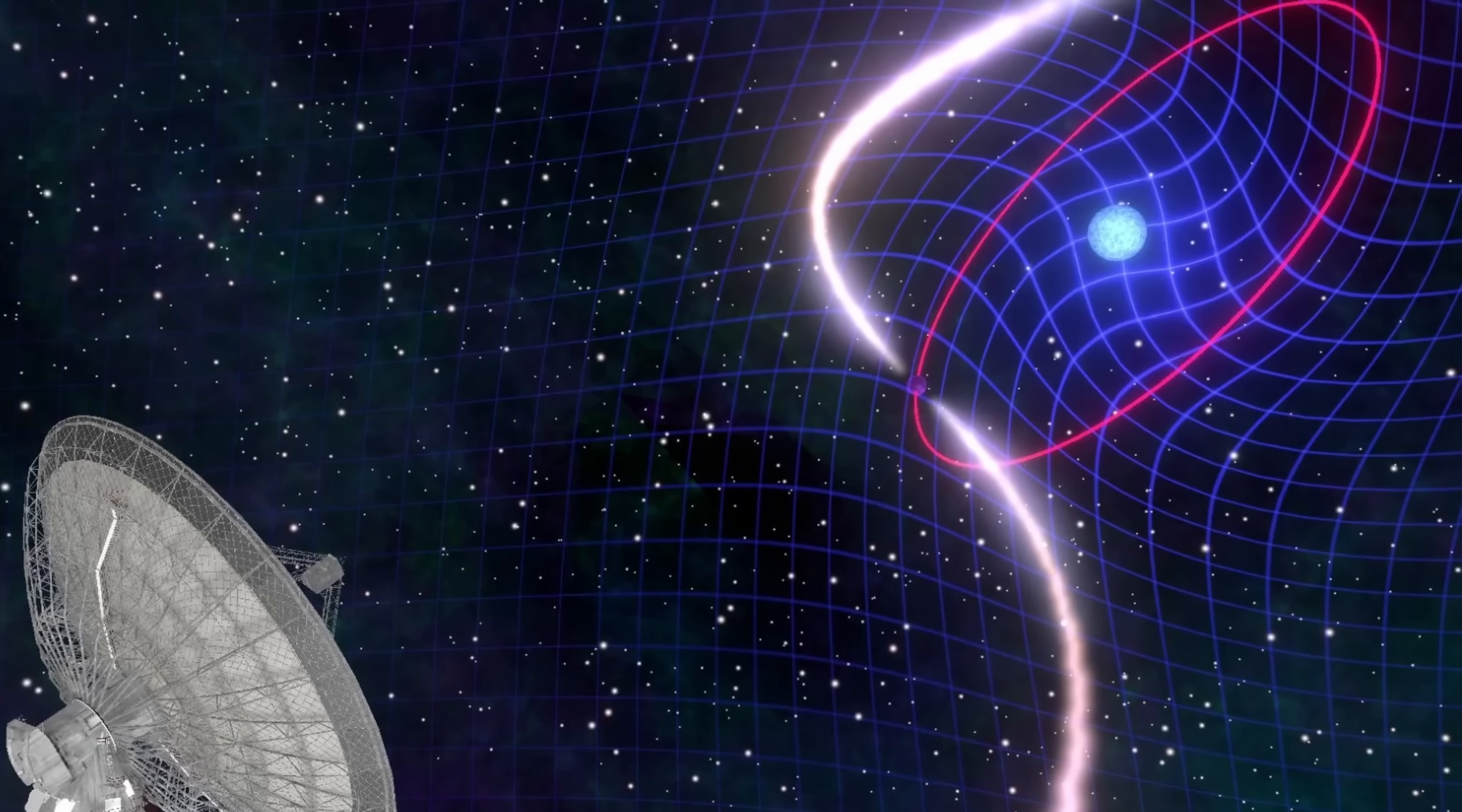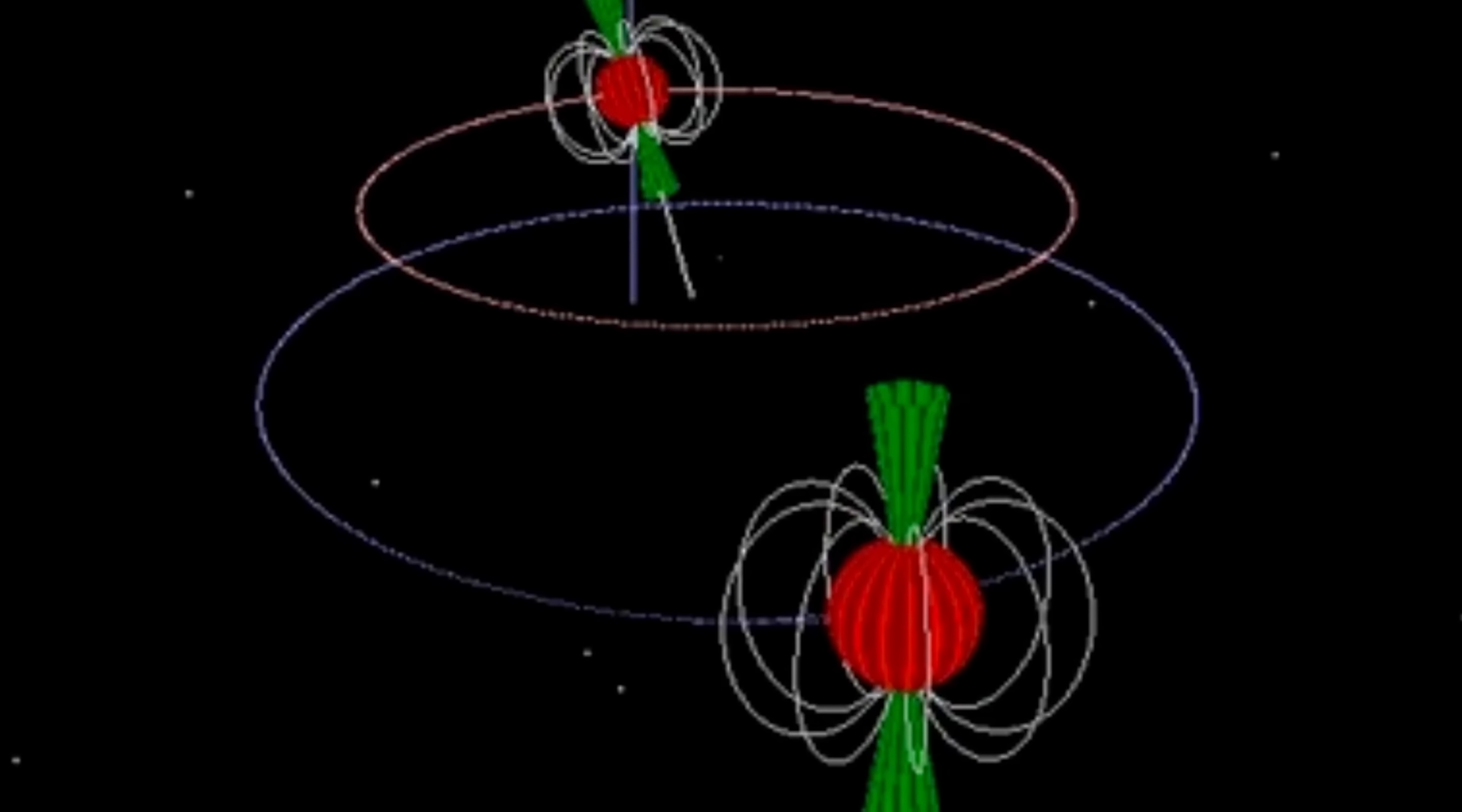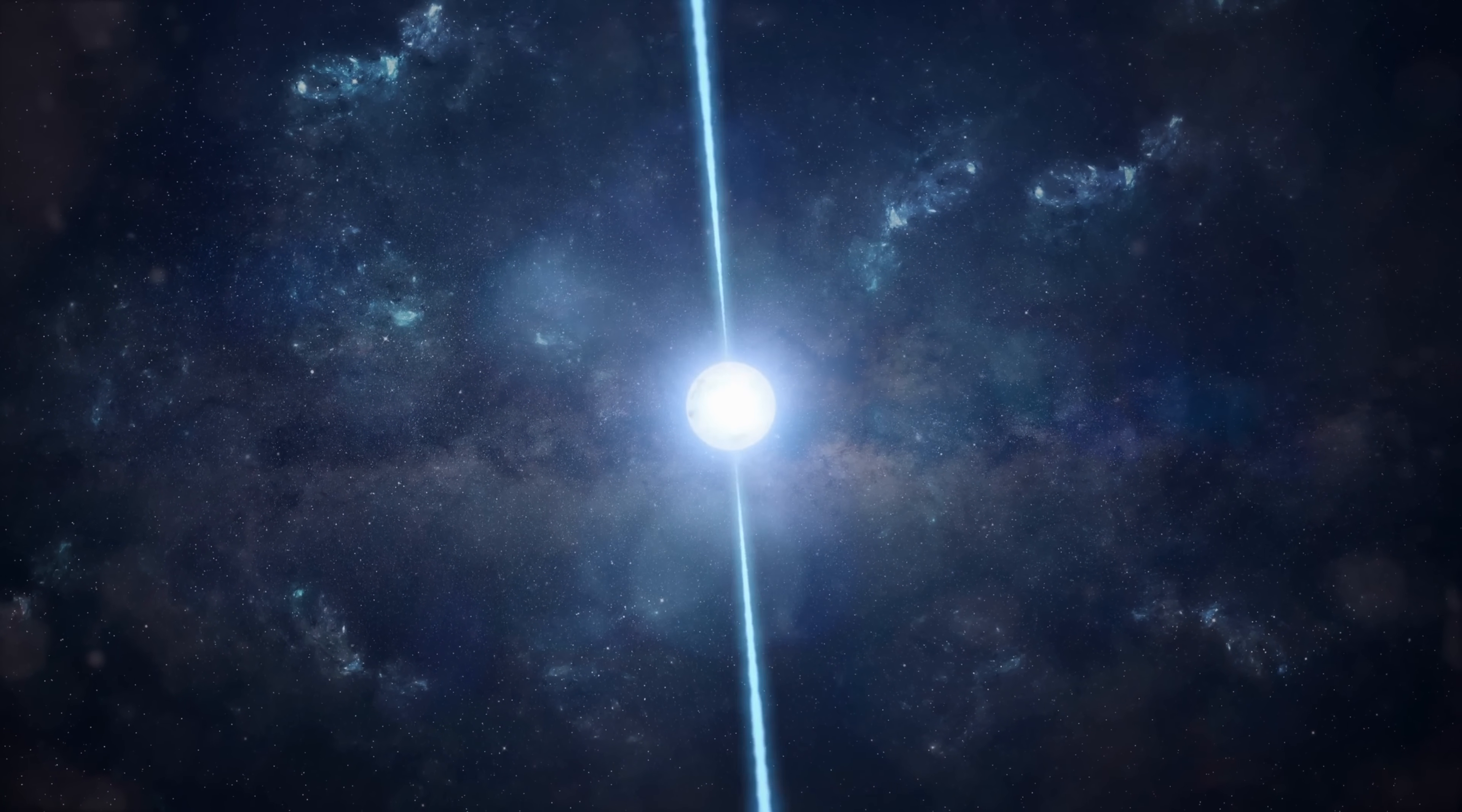And interestingly around the same time, a very similar effect was observed from an entirely different system. Here this was a pulsar and a white dwarf. In this case this is a pulsar whose name you see right here that has a very tight orbit with its partner a white dwarf that seems to be also spinning extremely fast.